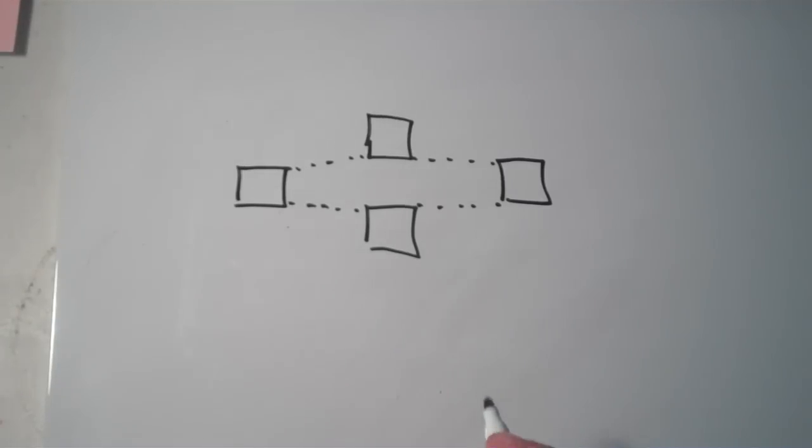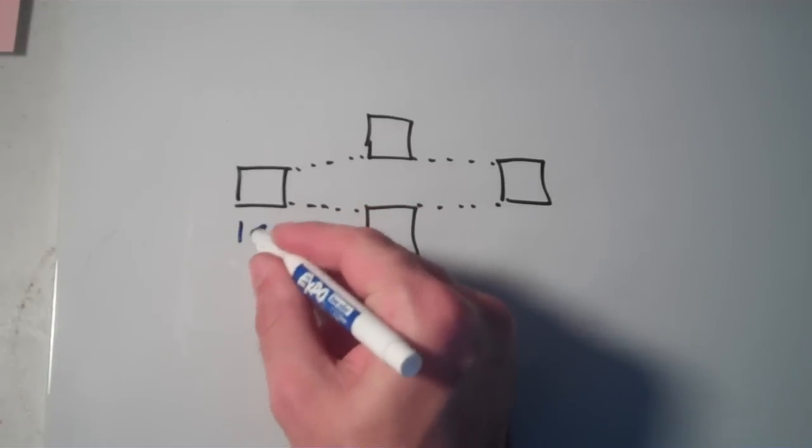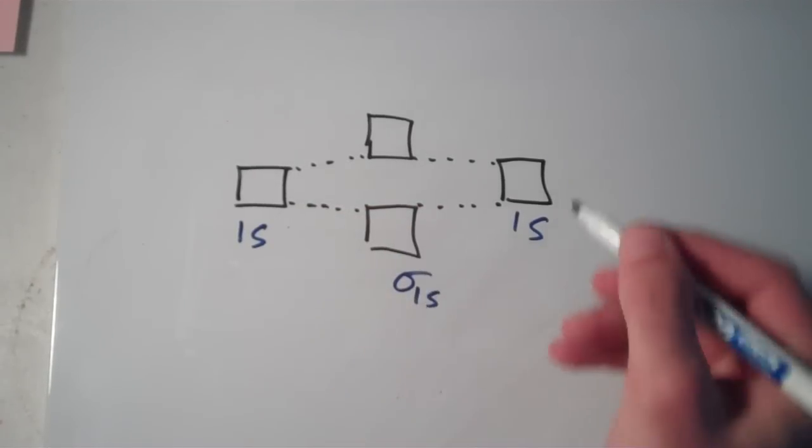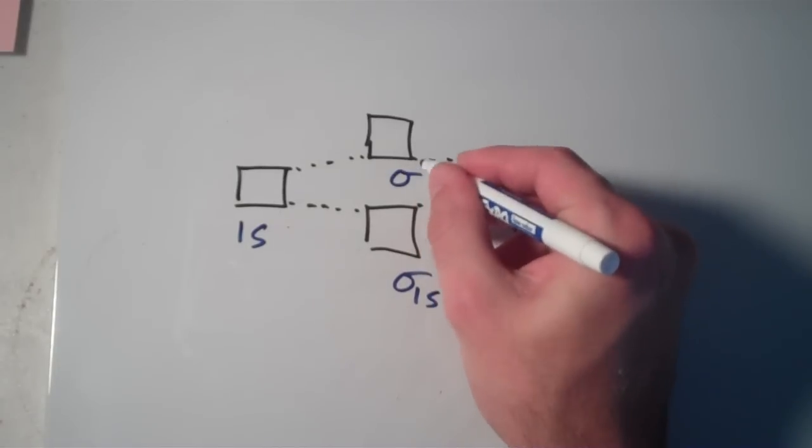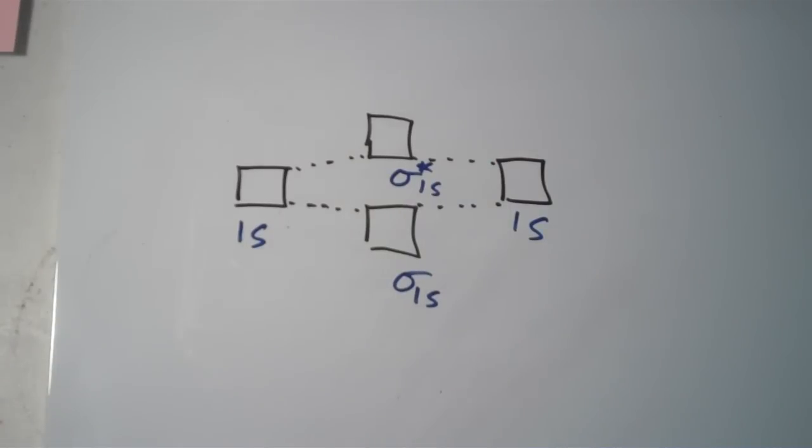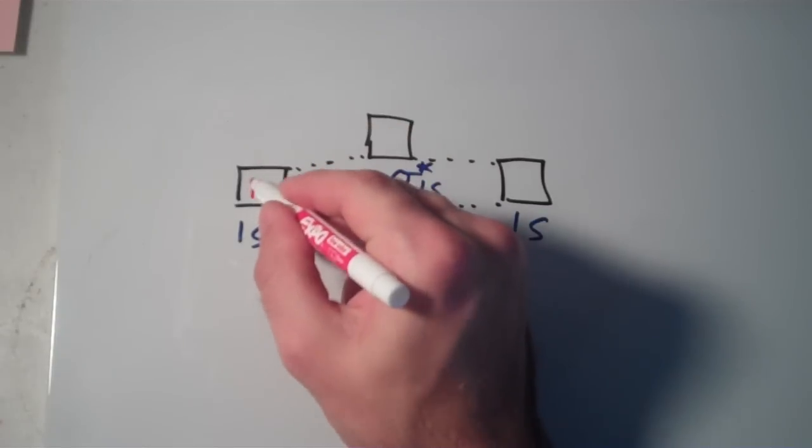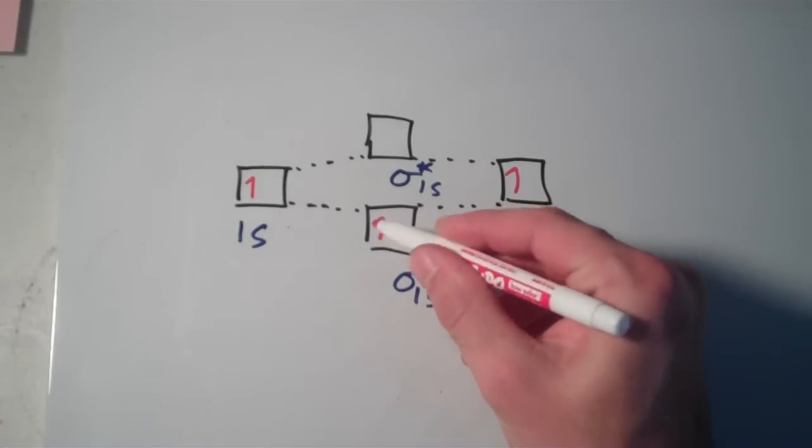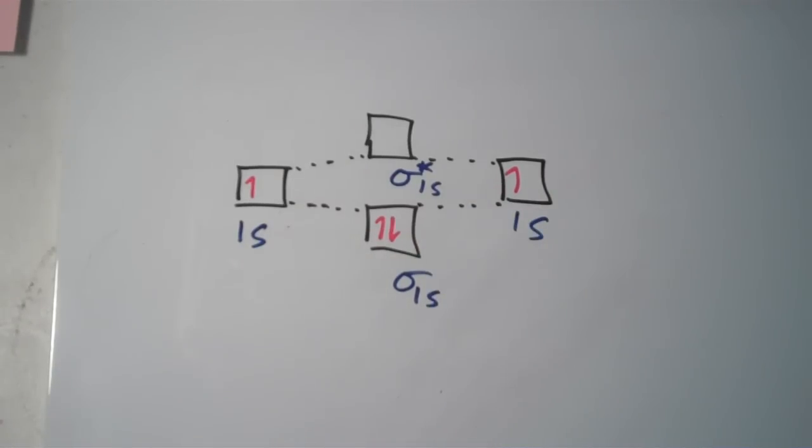The two atomic orbitals on the outside are going to be 1s atomic orbitals and the two molecular orbitals, this one is going to be the sigma 1s and this one over here is going to be the sigma star 1s. For hydrogen, the 1s atomic orbitals each have one electron and when they combine to form molecular orbitals, they'll fill up the sigma 1s orbital. This is the molecular orbital diagram for the H2 molecule. So, is H2 paramagnetic or diamagnetic?